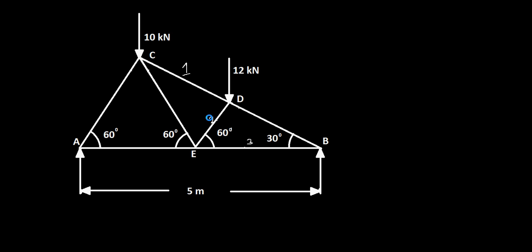As mentioned in the previous video on method of sections, we are going to draw a line passing through these three members. The condition is you can draw a line through a maximum of three members with unknown forces. Here we have unknown forces on members 1, 2, and 3. You can draw a line through here and consider each side of that line as a free body in equilibrium. Always select the side with fewer forces that will be easier to analyze.